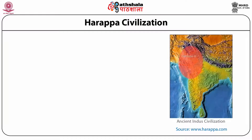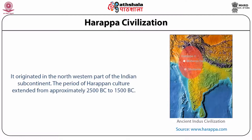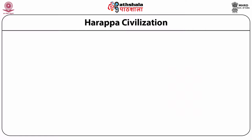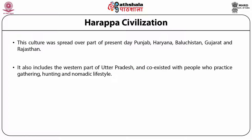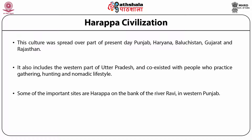The Harappan civilization is very famous, having started in the northwestern part of the Indian subcontinent. This period extended from 2500 to 1500 BC. Harappan civilization is characterized by sites found in present-day Punjab, Haryana, Balochistan, Gujarat, and Rajasthan. Parts of it can also be found in Uttar Pradesh, where it co-existed with people practicing gathering and hunting in a nomadic way. Some important sites of Harappan are on the banks of the river Ravi in western Punjab.